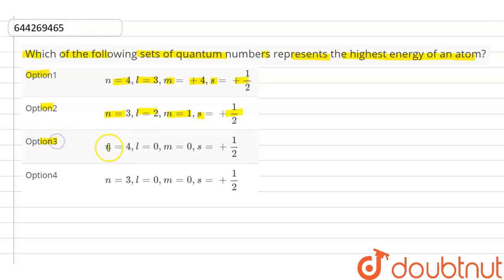Option third: n will be 4, l will be 0, m will be 0 and s will be half. Option fourth: n will be 3, l will be 0, m will be 0 and s will be half.